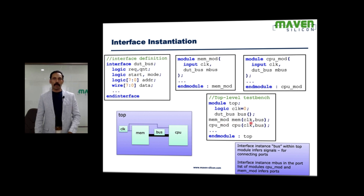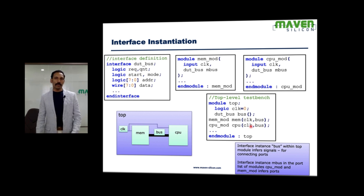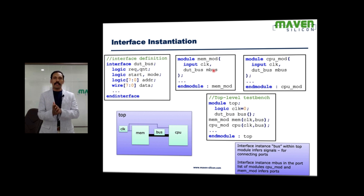At the top level, we define a logic variable clock and instantiate dot_bus with instance name bus. Then connections are made as: mem_mod mem(.clock, .bus) and cpu_mod cpu(.clock, .bus). This is the key difference — define the interface, use it in the port list of lower-level modules, instantiate the interface at the top, and use the interface instance to make all connections. If the interface instance is used within the port list of a module, it will be inferred as ports.